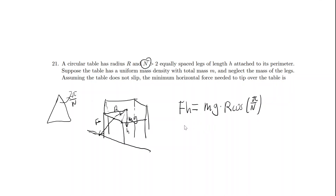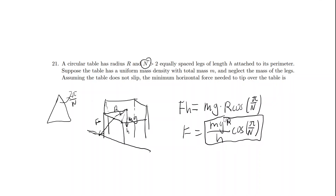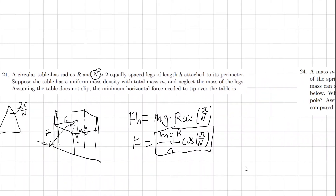So then F = mgr·cos(π/n) / h. If you are new to physics or just starting out, this problem might have been really difficult — you're barely given any information and you just want to tip it over, which is kind of difficult to work with. But once you start practicing these, you'll be able to set up a torque configuration like that. Let's move on to the next one.